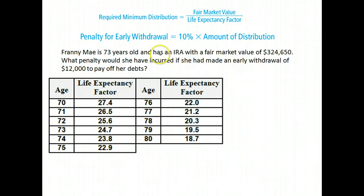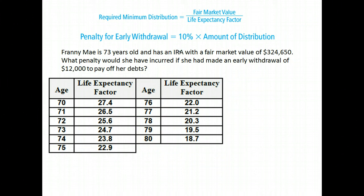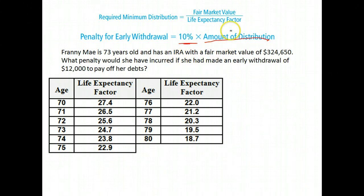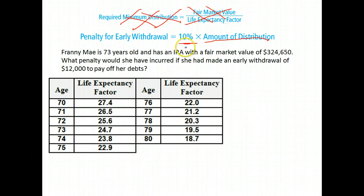The other way you can incur a penalty with a retirement account is if you take the money out before you're supposed to — before your retirement. The only exceptions where you don't pay a penalty are if the money is used for paying for education for yourself, your children, or your grandchildren, or if it's used to buy your first home. Other than that, you are penalized 10% of your distribution amount — 10% of whatever you withdrew from your IRA.